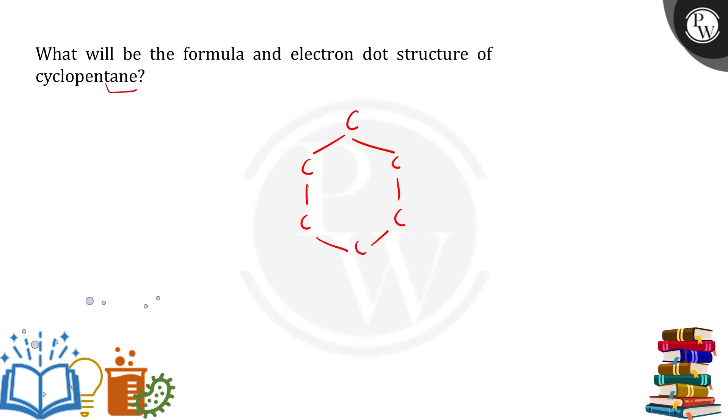Cyclopentane is an alkane, meaning saturated. Now, we have to make 4 valencies of each carbon. One carbon has made 2 bonds from the ring connections. We have to attach hydrogen to each carbon. There are two hydrogens per carbon.